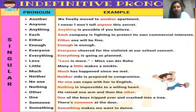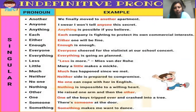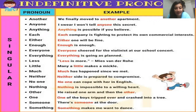You cannot shift into more than one apartment at a time, so the pronoun is singular in nature, but which specific apartment is not specified. 'Each company is fighting to protect its own commercial interest' — every company individually is fighting, but which specific companies they are is unspecified. 'Enough is enough' — something has been too much, but what exactly has been enough is not specified by the pronoun.